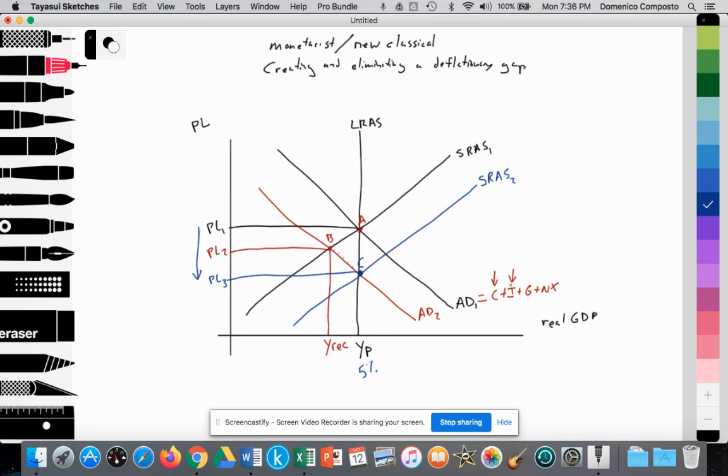As a result of the fall in consumption spending, revenue for firms falls, so business confidence goes down, and with it investment spending. Since C and I are determinants of AD, aggregate demand falls from AD1 to AD2.